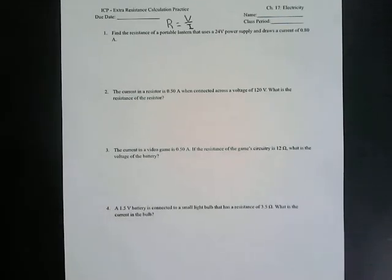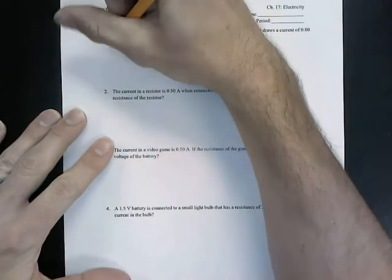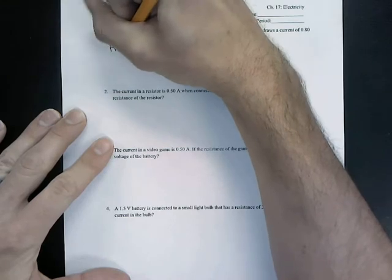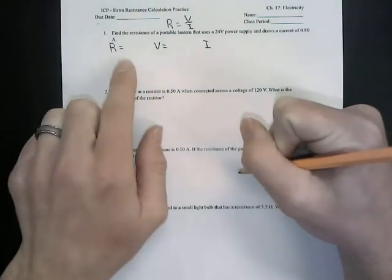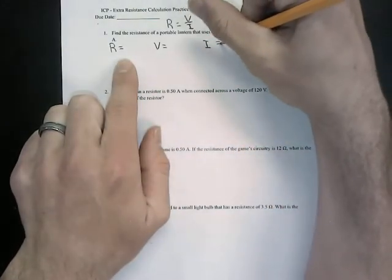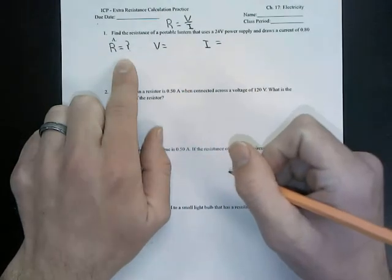So problem one says find the resistance of a portable lantern that uses a 24-volt power supply and draws a current of 0.80 amps. So again, we're going to write out what we know and what we don't know, and then we're going to plug those back into the equation. So the resistance, it says find the resistance, so that is our question mark. That's what we're going to need to find.